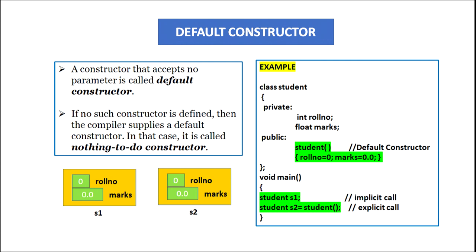Default constructor is the constructor that accepts no parameters. Taking the example of class student with private data members roll number and marks, in the public section we declare a constructor which has the same name as the class and assigns initial value 0 to roll number and 0.0 to marks. In void main, the statement 'student S1' will create the object S1 and invoke the constructor student implicitly. The moment object S1 is created, memory is allocated to its data members roll number and marks, and the constructor assigns initial values 0 to roll number and 0.0 to marks.